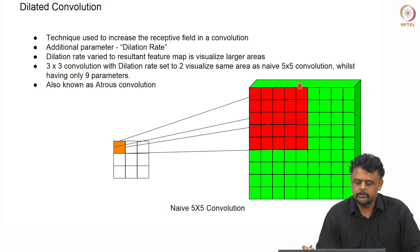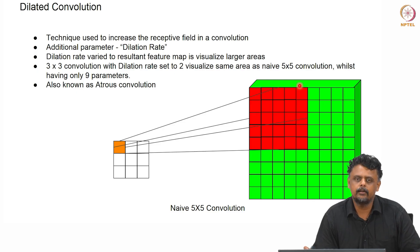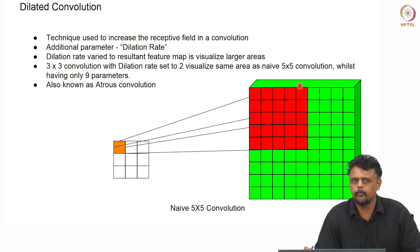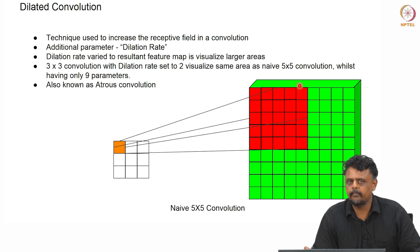Now, dilated convolutions are another type of convolution used to increase the receptive field of the convolution given a smaller filter size. It is a computationally cheap way of getting a larger receptive field using a smaller filter kernel.